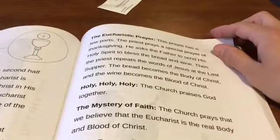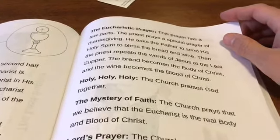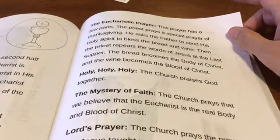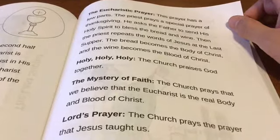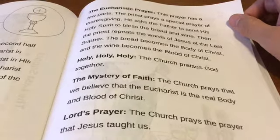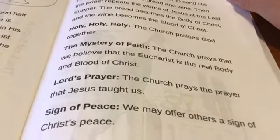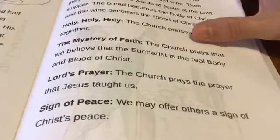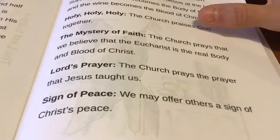The Eucharistic prayer has a few parts. The priest prays a special prayer of thanksgiving. He asks the Father to send His Holy Spirit to bless the bread and wine. Then the priest repeats the words of Jesus at the Last Supper. The bread becomes the body of Christ and the wine becomes the blood of Christ. Then we have the Holy, Holy, Holy, where the church praises God. We have the mystery of faith — the church prays that we believe that the Eucharist is the real body and blood of Christ.